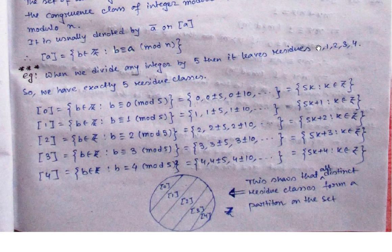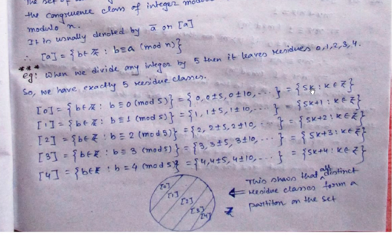This means: which integers give remainder 0 when divided by 5? Which give remainder 1? Which give remainder 2? These are all residue classes. For remainder 0 — centered on 0 — we are creating a class: the set of B belonging to Z such that B is congruent to 0 under modulo 5. So those numbers are multiples of 5, that is 5K where K belongs to Z.